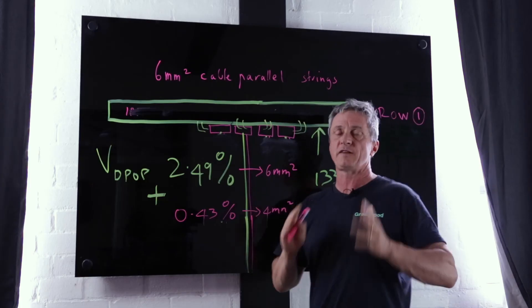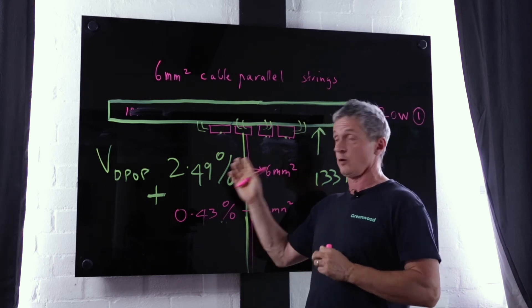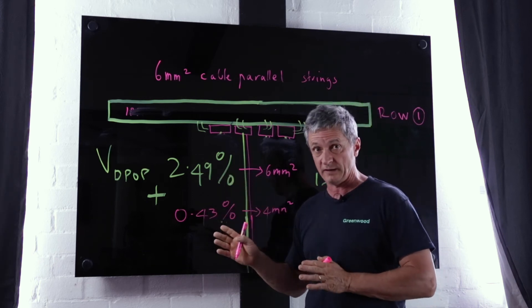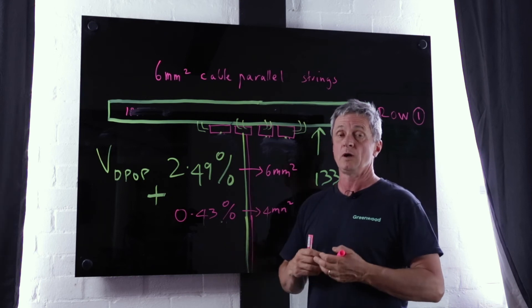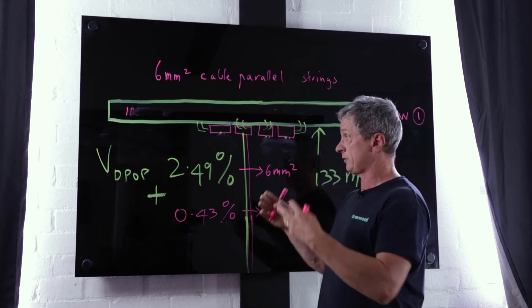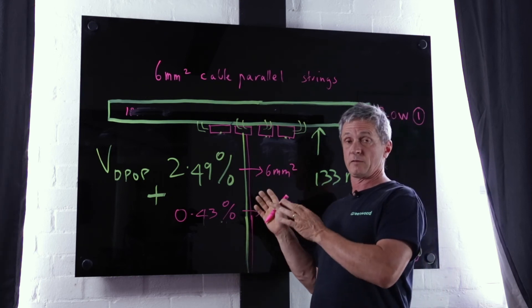Now as well as that calculation we also have to calculate separately the volt drop for the internal cabling. And in this case it's 0.43% using 4mm cable.